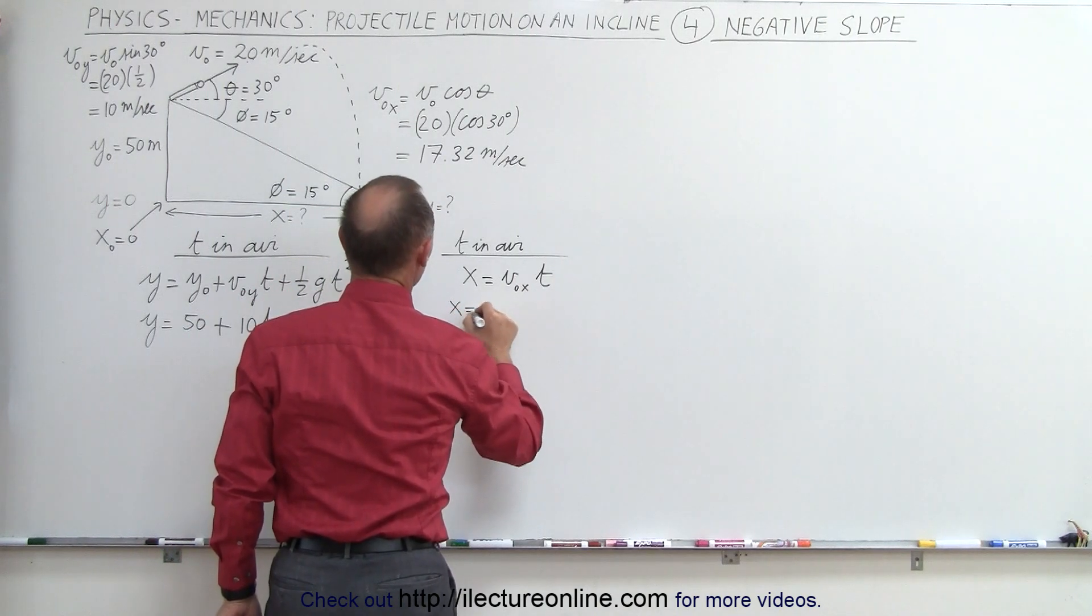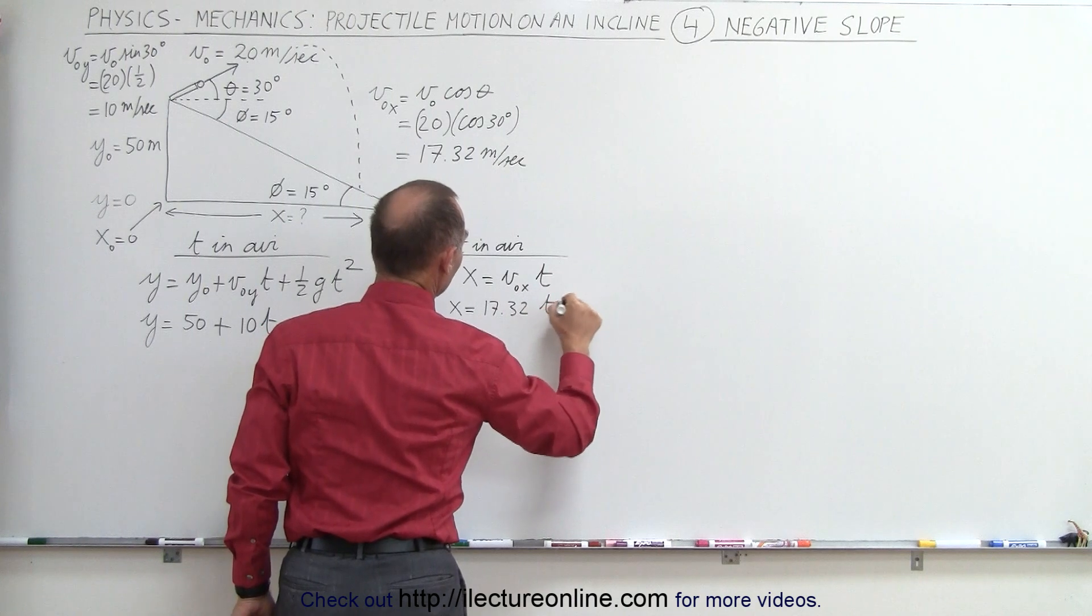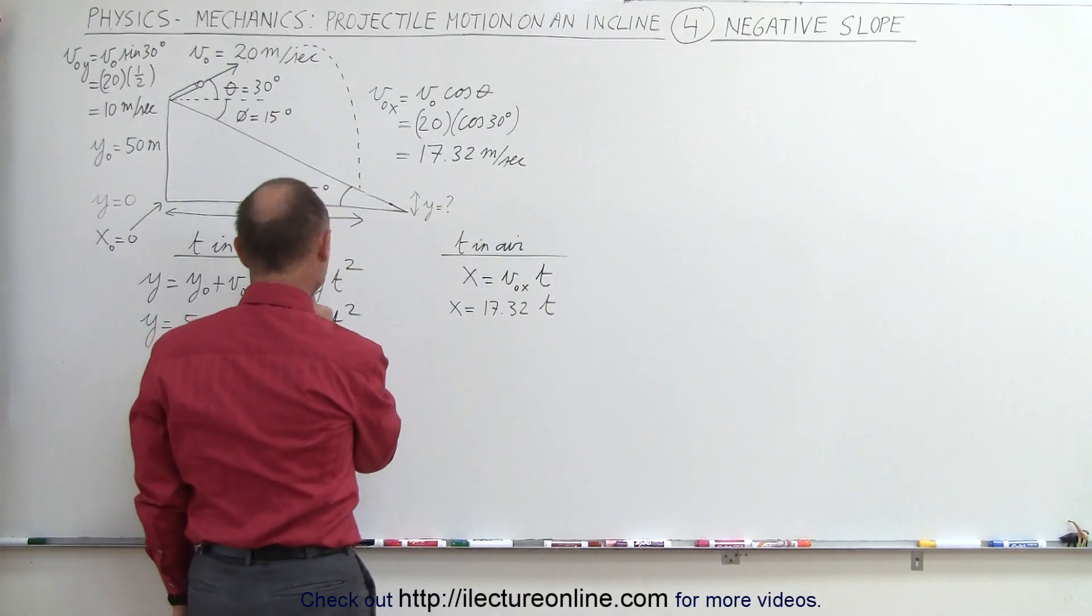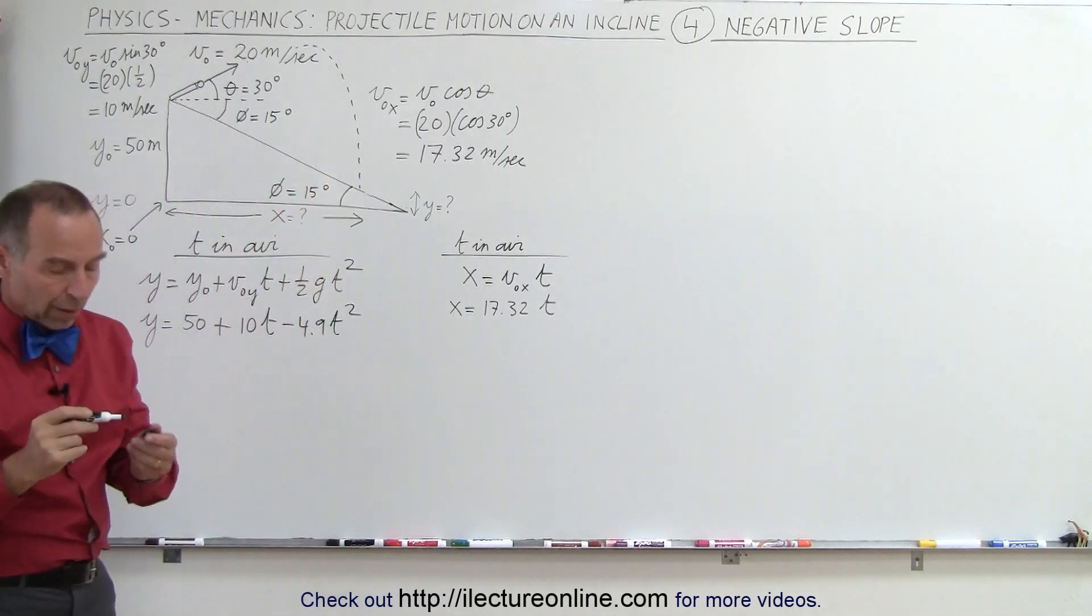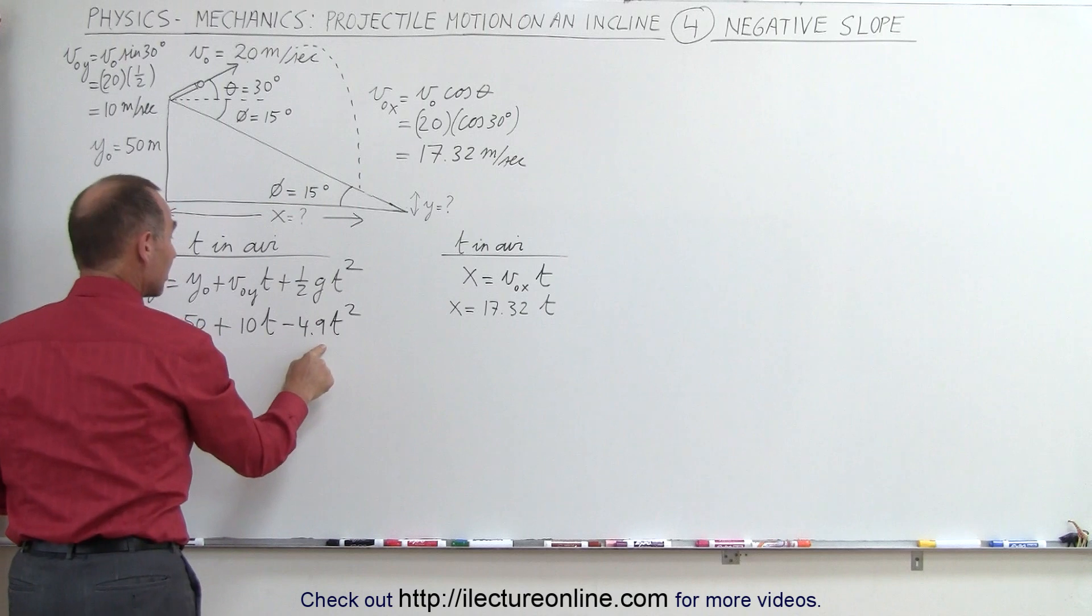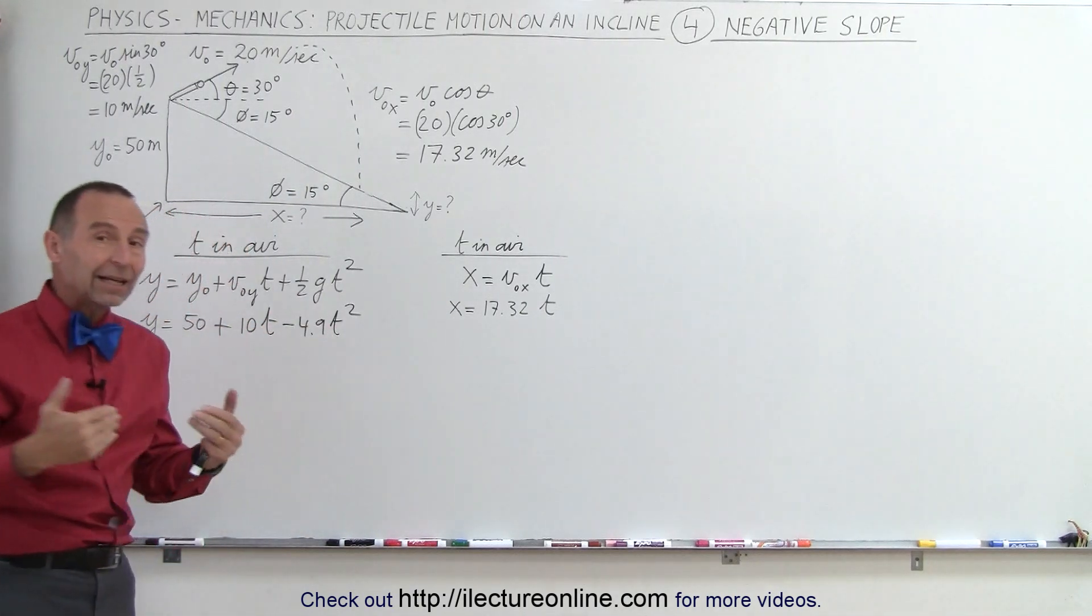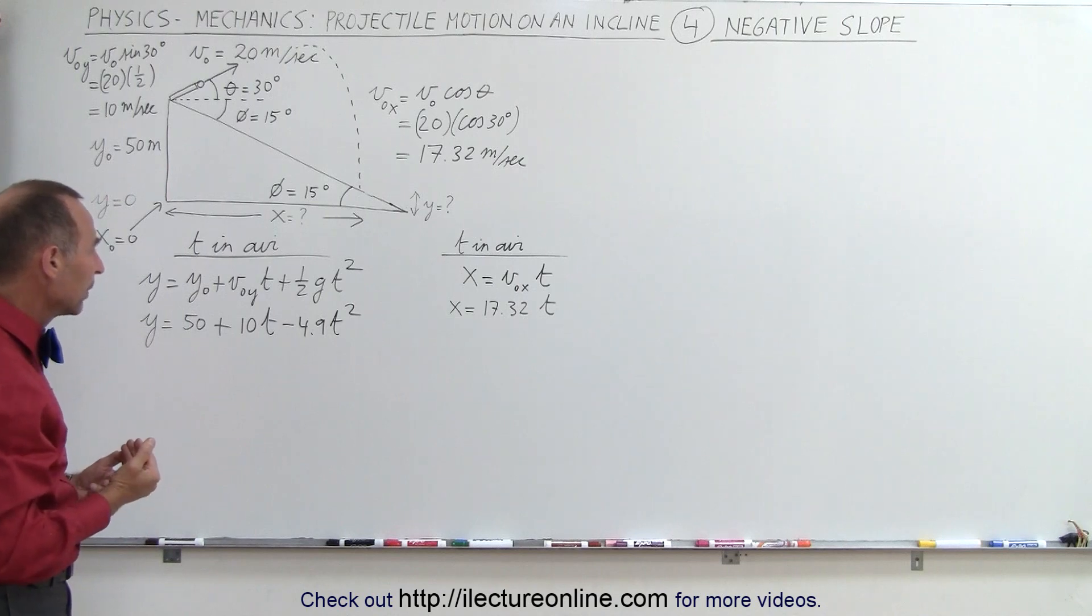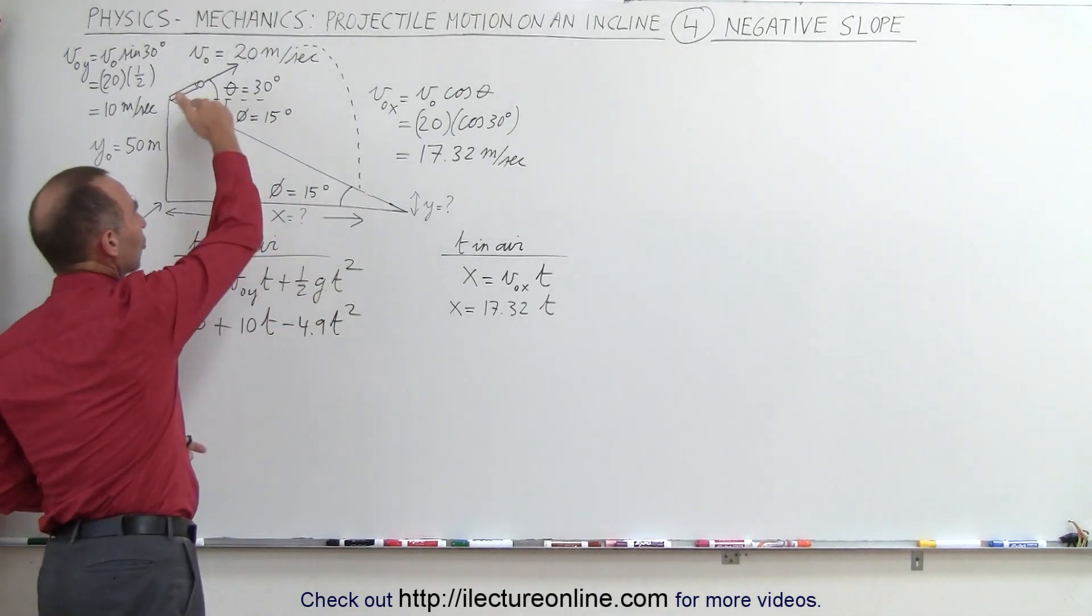So x equals 17.32 meters per second times time, which means that, let's see here. What should we do next? I'm inclined to go ahead and solve this for t and plug that in here, but then I'll have an x and a y in the same equation. And I don't know either one of the two, which means I need to find the relationship between the x and the y. And that of course comes from the slope right here.